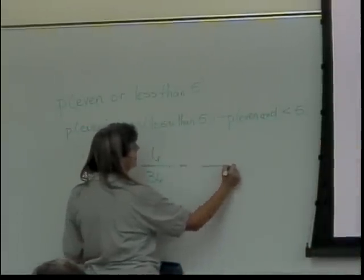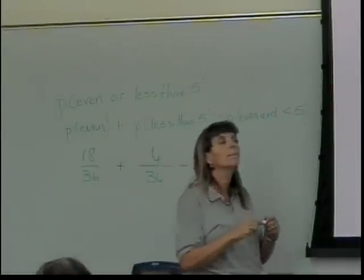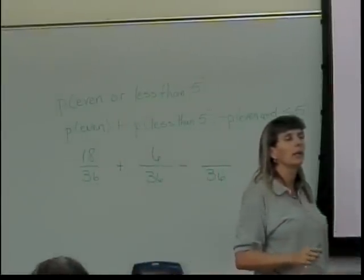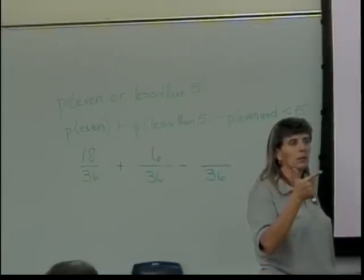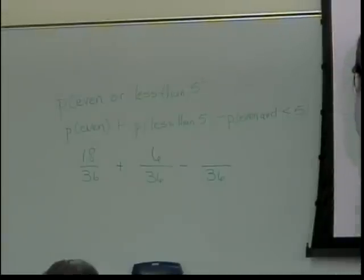How many things did I just count twice? How many things did I count as both even and less than 5? So this one came out to be even, right? 4 and 2. Then this one, this one, and that one. So it's a total of 4 things.